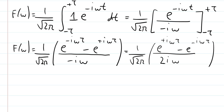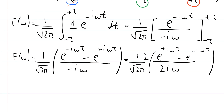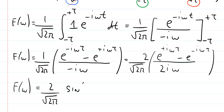We also put a factor of 2 into the denominator and a 2 in the numerator to balance. The reason is that we can now identify the quantity (e^{+iωτ} minus e^{-iωτ}) over 2i as simply the definition of the sine function. So f(ω) equals 2 over the square root of 2π, times sin(ωτ) over ω. Finally, putting τ in both numerator and denominator, the whole expression becomes a function of ωτ.